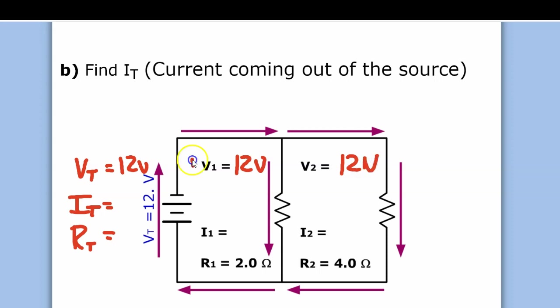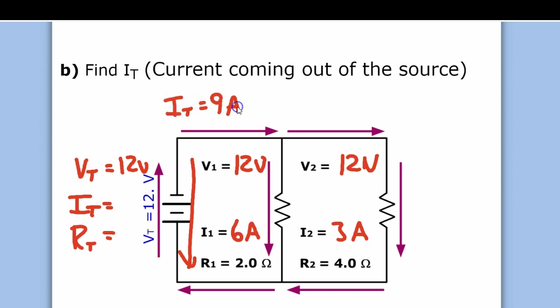There are 12 volts across each branch. Using V equals IR, this gives 6 amps for the 2-ohm resistor — because 6 times 2 is 12. Using V equals IR again, 4 times 3 amps equals 12 — so that's 3 amps through the 4-ohm resistor. Now that you see the two branch currents, the total current IT equals 9 amps.